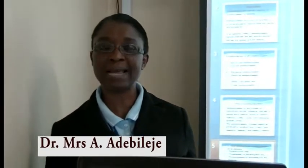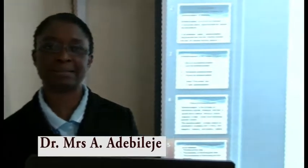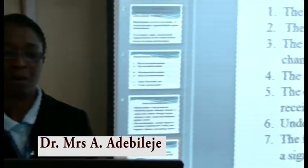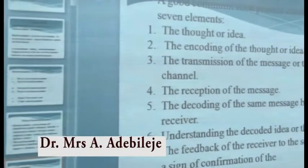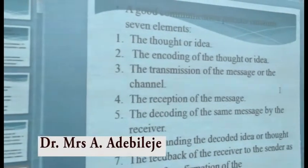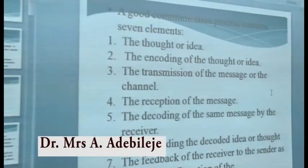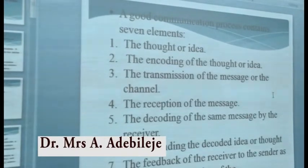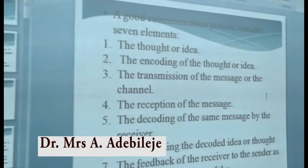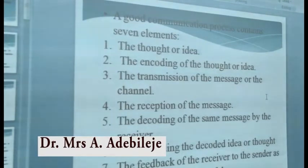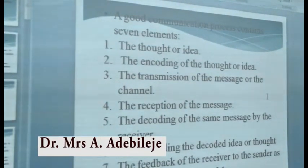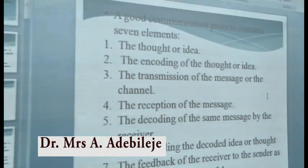Therefore, a good communication process should contain seven elements. Number one is the thought or idea. In other words, before communication takes place, there must be something — an information — that is being passed to the receiver.